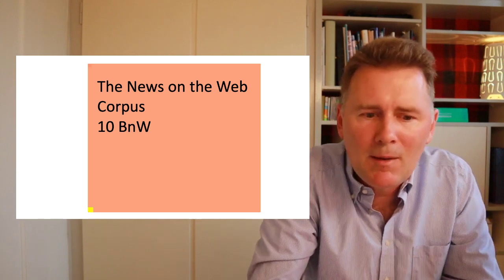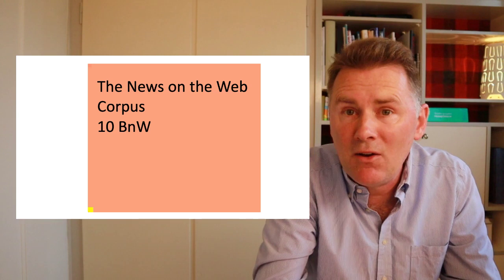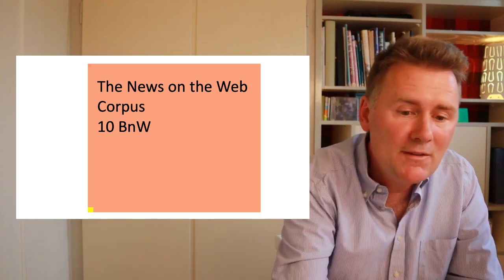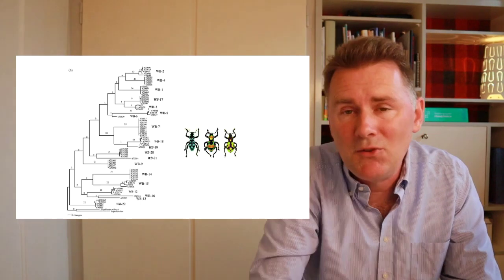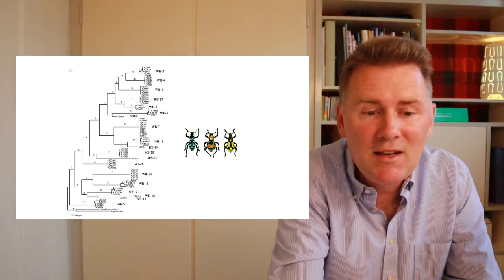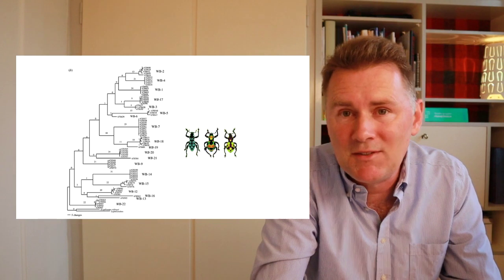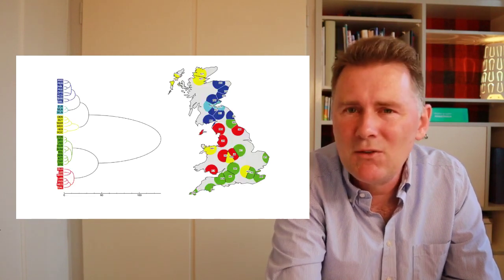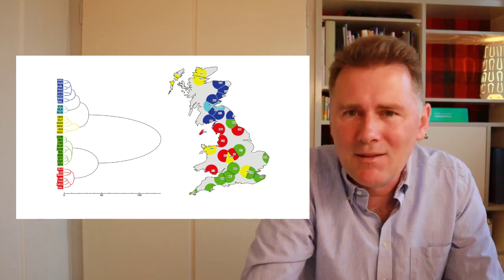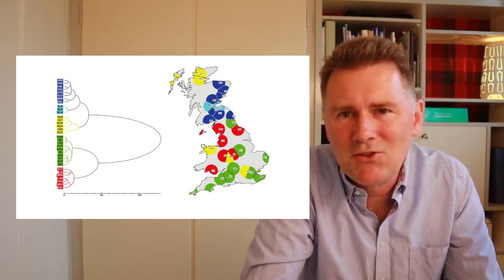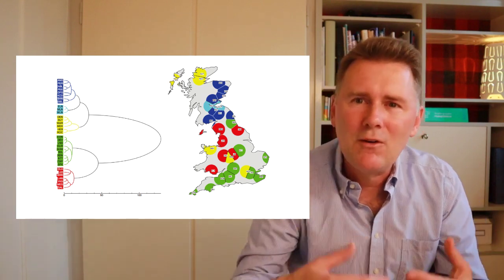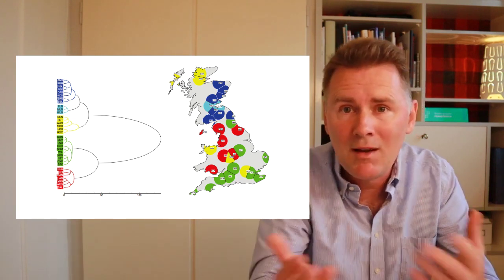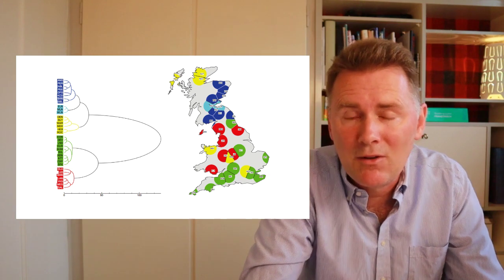That means that linguists had to change their methods of analysis. Linguists have borrowed and adapted methods from many other fields, including the natural sciences. For example, biologists have used hierarchical clustering to study the DNA of different beetle species. Linguists have borrowed that in order to distinguish between different dialects on the basis of their morphosyntactic features. So there are conceptual similarities and methodological similarities between linguistics on the one hand and the natural sciences on the other.